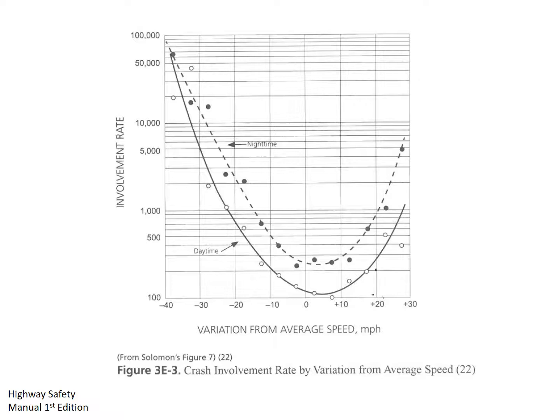Overall, the greater the variation in speed of any vehicle from the average speed of all traffic, the greater its chance of being involved in a crash. In general, there's a higher risk at nighttime, but the curve generally follows the same shape as the daytime curve.